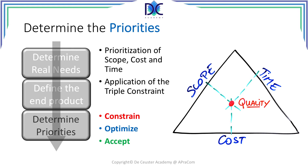The last process in this first step is to determine the priorities. The priorities relate to scope, cost, and time — it is the application of the triple constraint, also known as the scope triangle and the iron triangle. The first element to define is what parameter is constraining, what is limiting the project — it can be the scope, the time, or the cost. The second parameter is the parameter to optimize, and the last parameter is the parameter to accept. Accept does not mean that you have a blank check — there are still limitations to that last criterion.